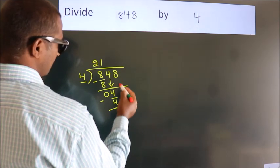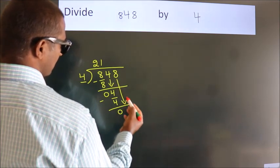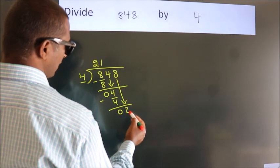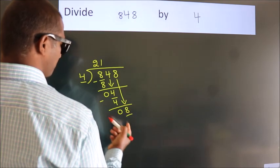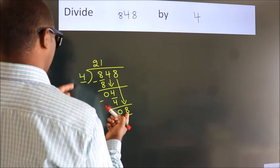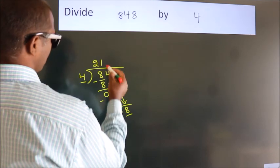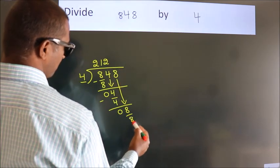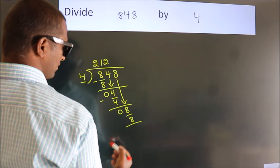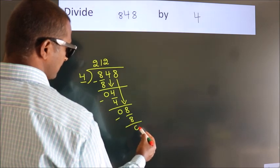After this, bring down the beside number. So, 8 down. So, 8. When do we get 8? In 4 table, 4 2s, 8. Now, we subtract. We get 0.